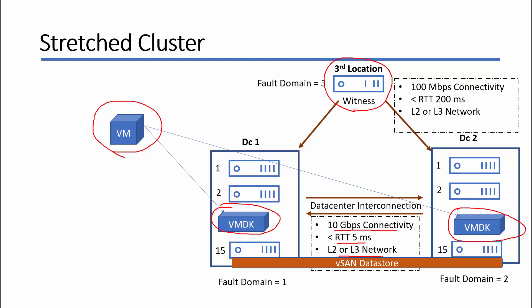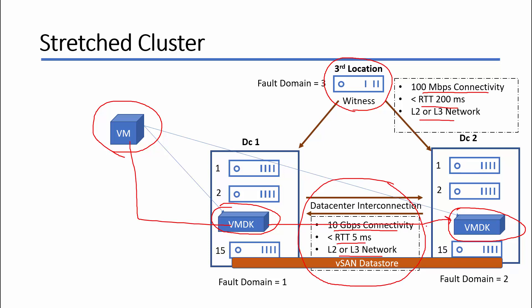Layer 2 or Layer 3 network is supported. The network requirement between the witness and data center 2 is 100 Mbps connectivity, round trip time less than 200 milliseconds, and Layer 2 or Layer 3 network. Any write to a VMDK will go to the second copy of VMDK in data center 2. By this way, any failure in data center 1 will be managed with the available copy in data center 2 and the virtual machine will continue working in the second data center.